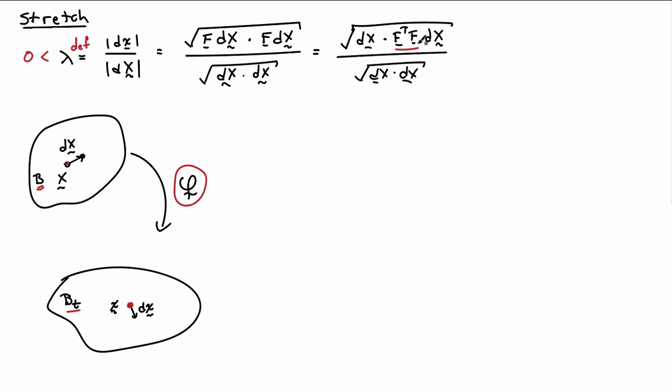So I'll end up with D capital X dotted with F transpose F dx and F transpose F is a quantity that comes up quite often. So I'm going to go ahead and define that to be, I'll use the symbol C and it has a name also. It's called the right Cauchy Green deformation tensor and so we'll use that quite a bit in what follows.